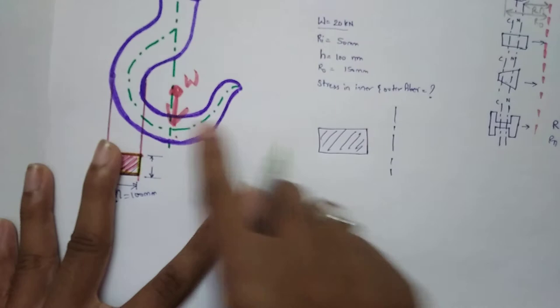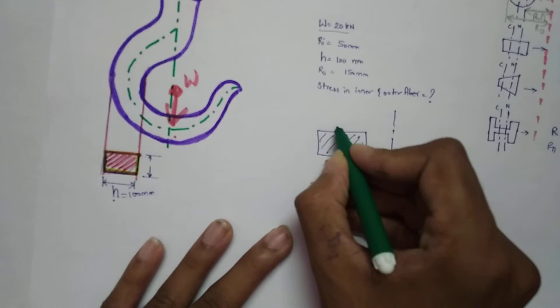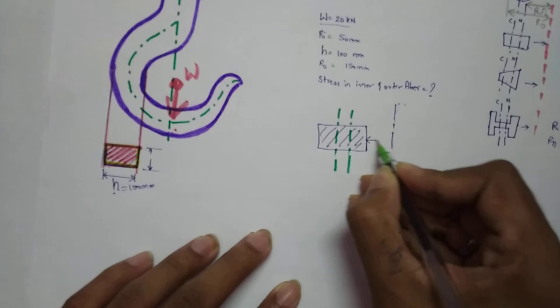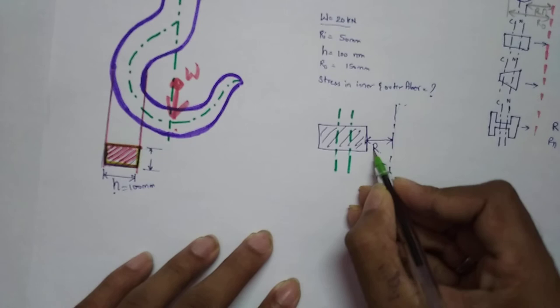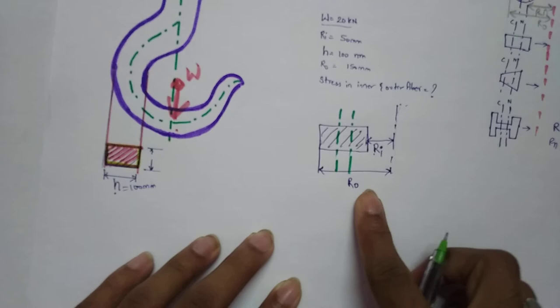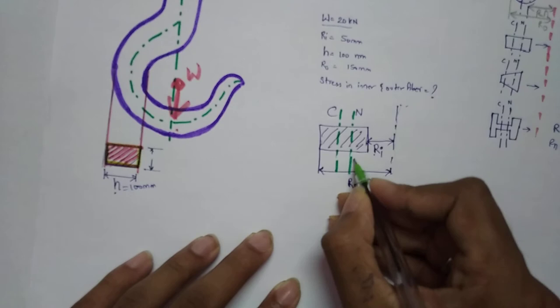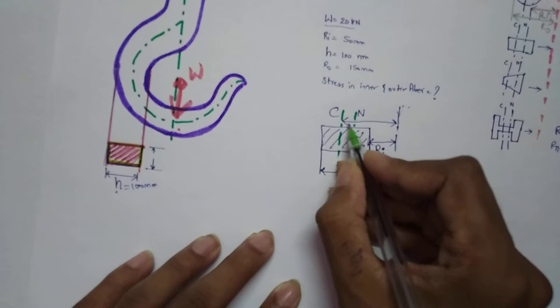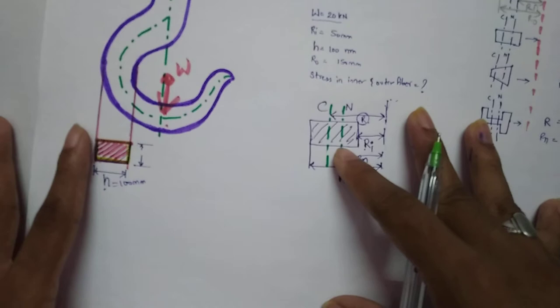I will draw the diagram here. This is the main axis. For this rectangular cross section there will be one central axis and one neutral axis. From this axis, the starting of the cross section is known as R_i (R internal), and the last one from here to the end is known as R_o (R outer). From the central axis to the neutral axis distance is represented as R_N.